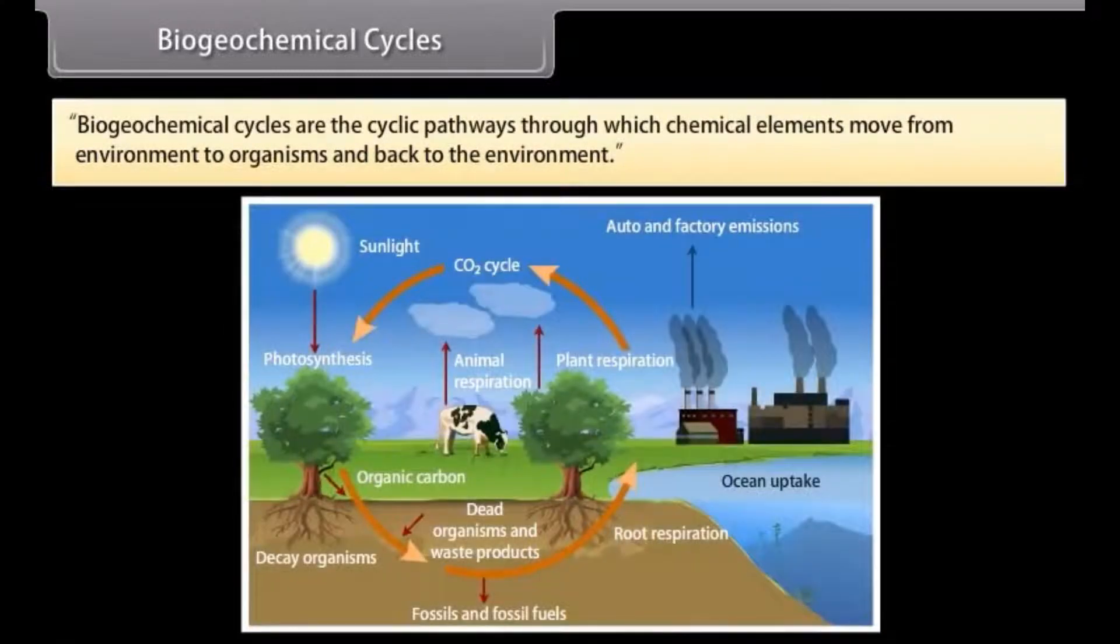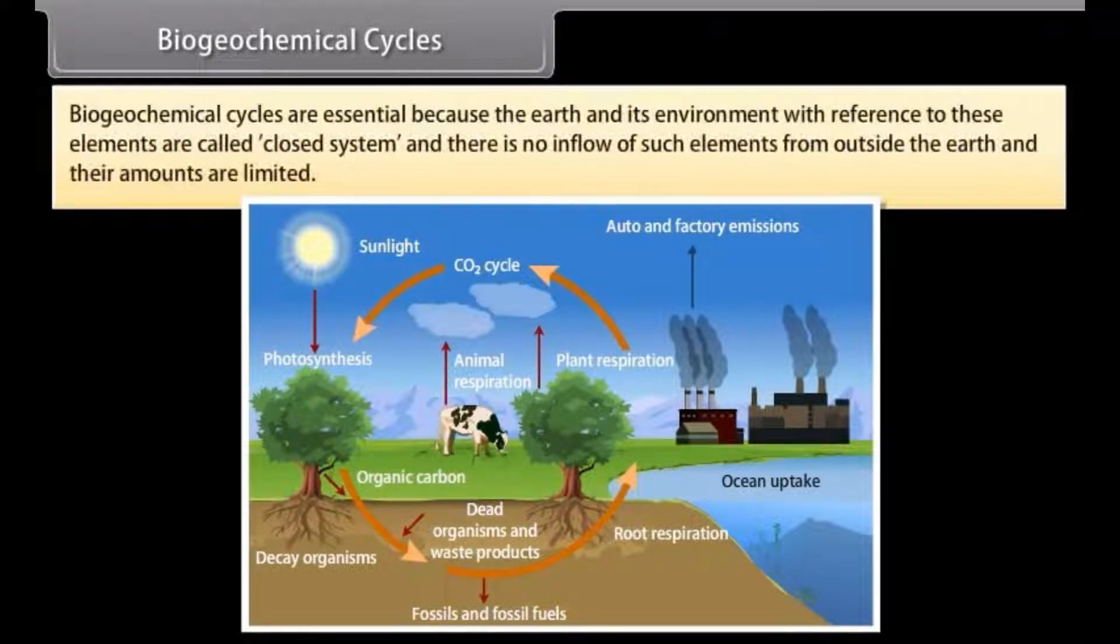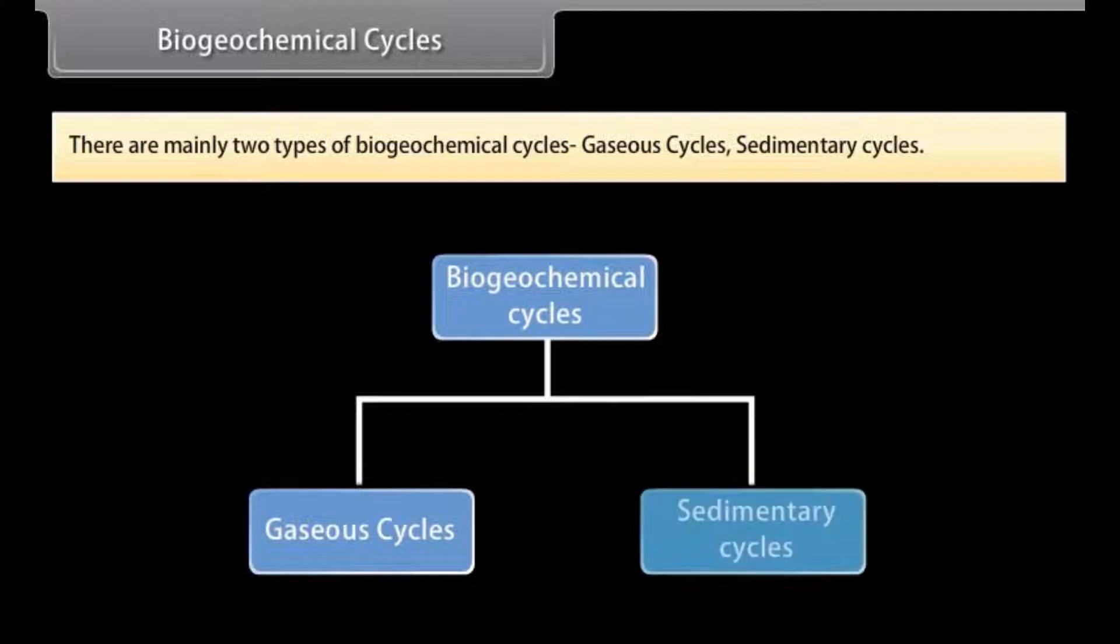Biogeochemical cycles are the cyclic pathways through which chemical elements move from environment to organisms and back to the environment. Biogeochemical cycles are essential because the earth and its environment with reference to these elements are called closed system and there is no inflow of such elements from outside the earth and their amounts are limited. There are mainly two types of biogeochemical cycles: Gaseous cycles and Sedimentary cycles.